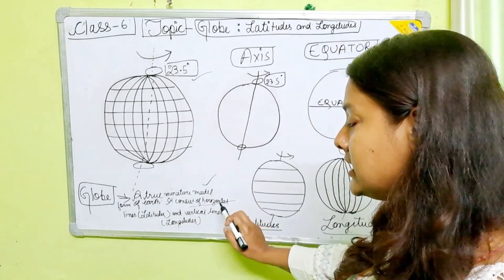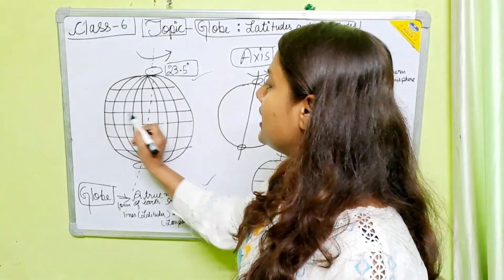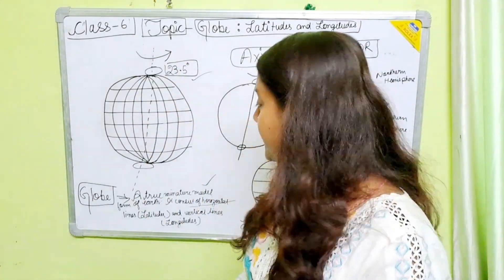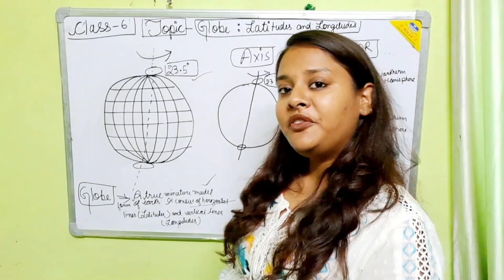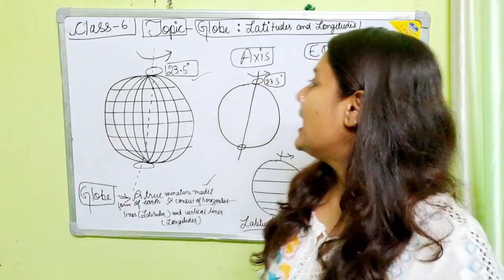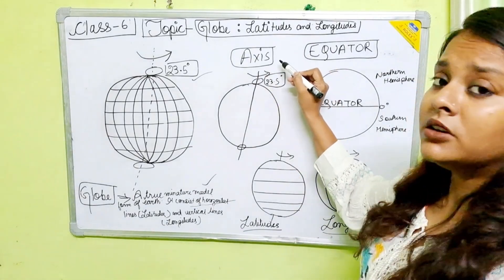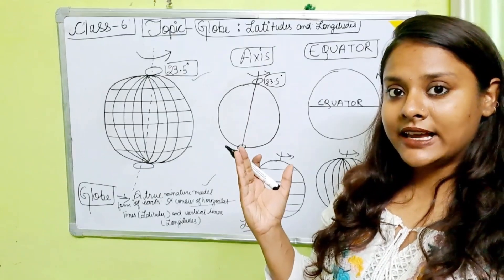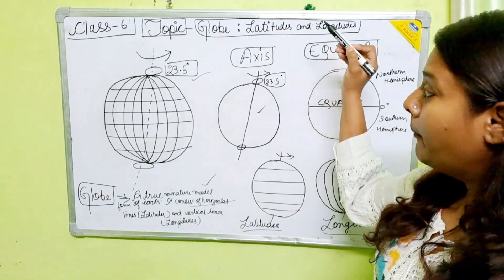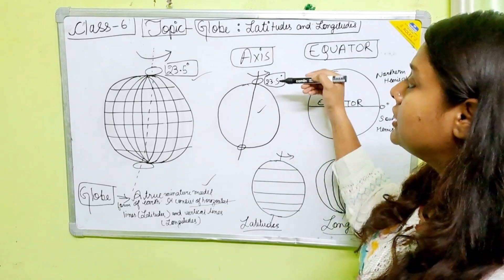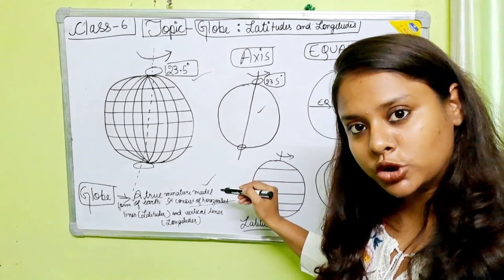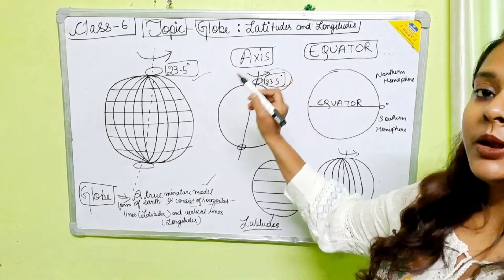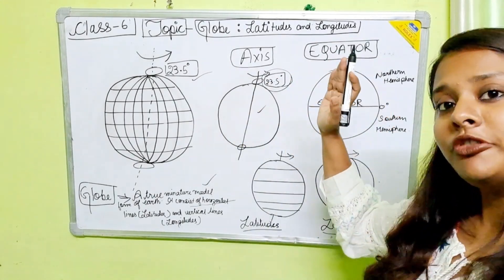Globe consists of lines which are latitudes and longitudes. The horizontal lines are called as latitudes and the vertical lines are regarded as longitudes. We have seen that Earth is slightly tilted and that tilted angle is 23.5 degrees. Now, in our previous class, we have discussed what an axis is. The axis connects the North Pole with the South Pole — every planet has its own axis. The axis is also tilted at 23.5 degrees.